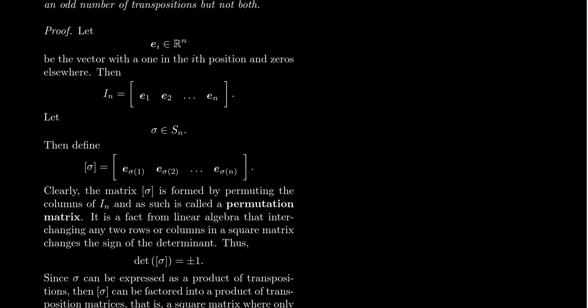Now let's talk about permutations. Let sigma be a permutation in S_n, where n is the same as the dimension of our vectors and matrices. What we're going to do is create a permutation matrix associated to that permutation sigma, denoted [sigma]. The idea is that [sigma] is the matrix where we permute the columns of the identity matrix according to sigma.